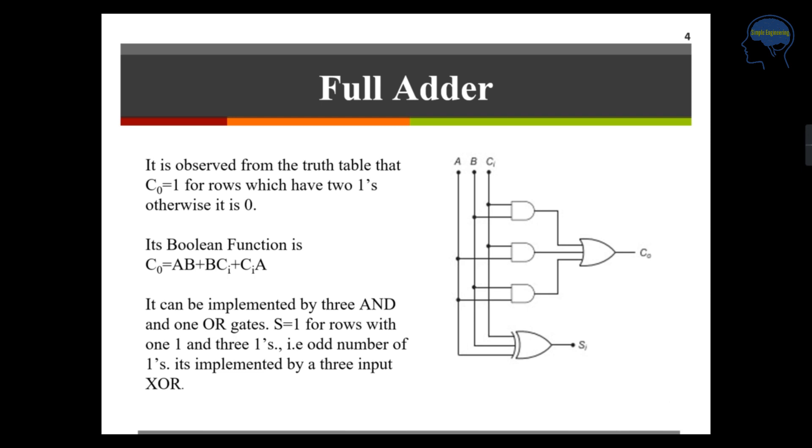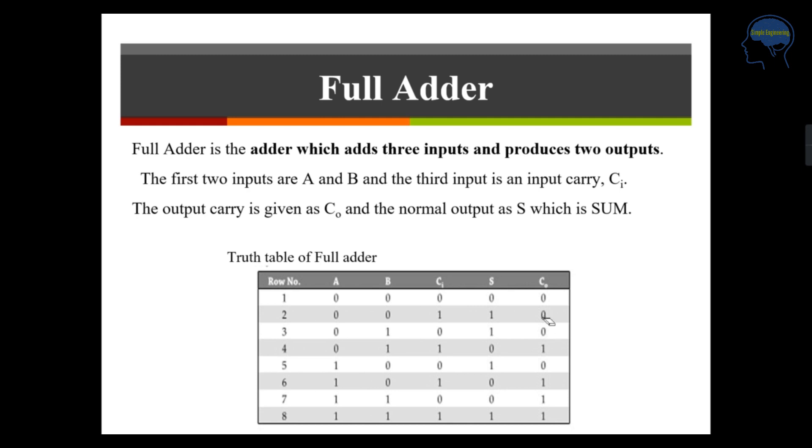For your full adder you have the boolean expression for carry C naught. If you look your truth table you can see 1, 2, 3, 4. There are 4 ones in your carry. When you take the carry here it is 1, its corresponding input is A bar because it is 0, A bar B C in and here also your C naught is 1 which means that A, B bar C in. Here it is 1 which is A, B, C in. Here also it is 1 which is A, B, C in.